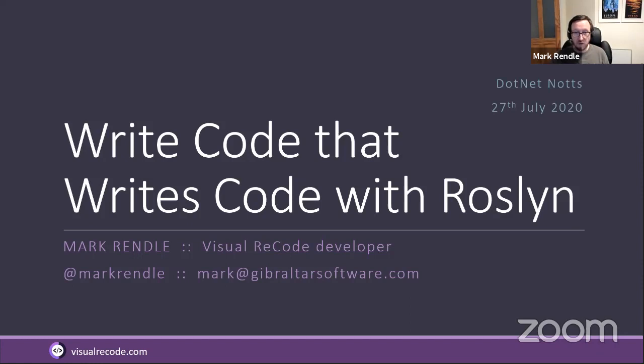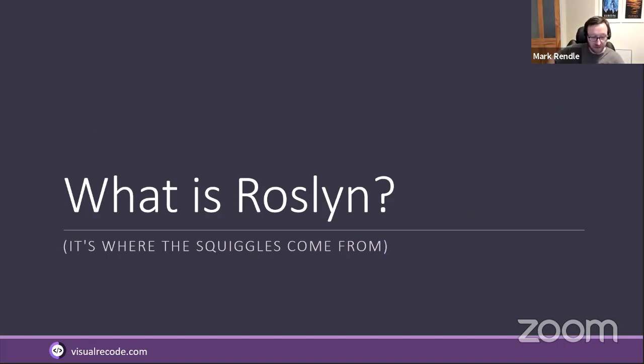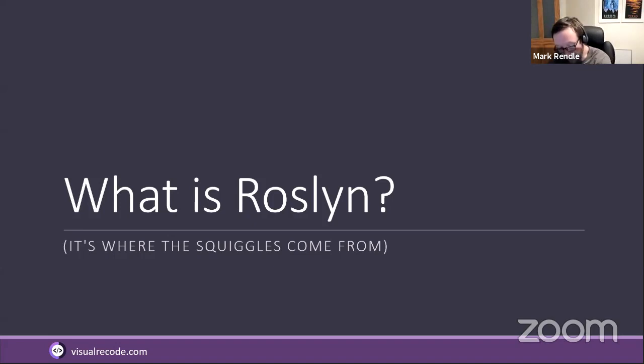Hopefully everybody knows this already, but what is Roslyn? It is fundamentally where the red and green squiggles come from in Visual Studio — unless you've got ReSharper installed, in which case they come from ReSharper. Roslyn is the C# compiler platform, and also the VB.NET compiler platform. For a long time, C#'s compiler was written in C++ — but everybody knows it's not a proper programming language until the compiler is written in itself.